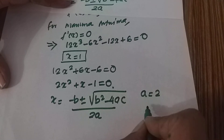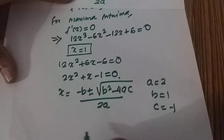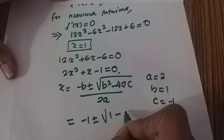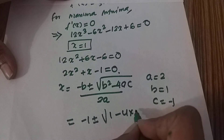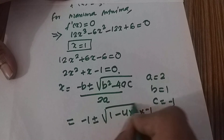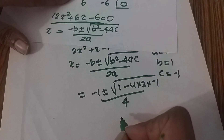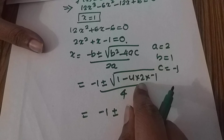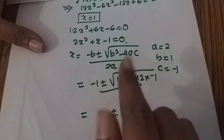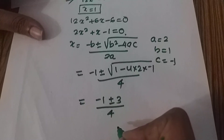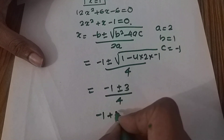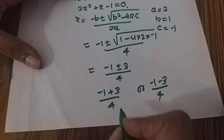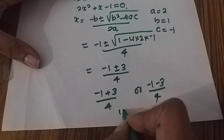Here a = 2, b = 1, c = −1. Substituting: x = (−1 ± √(1 + 8)) / 4 = (−1 ± √9) / 4 = (−1 ± 3) / 4. So x = (−1 + 3)/4 = 1/2, or x = (−1 − 3)/4 = −1.